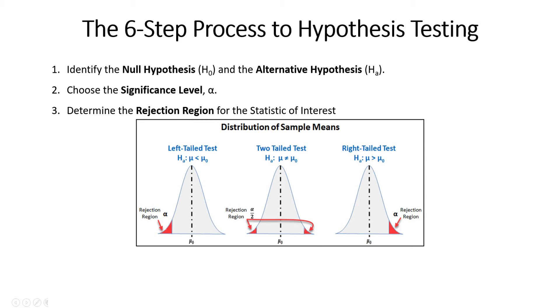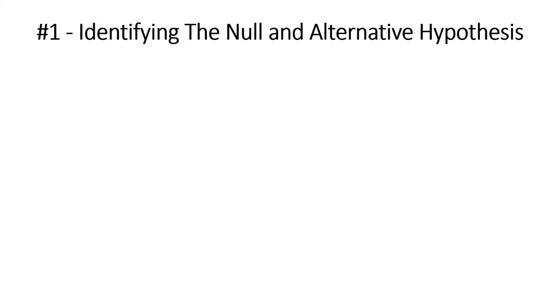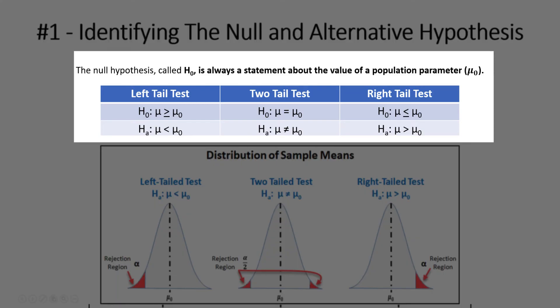Before you can determine a rejection region, you have to know your significance level. Once we have our rejection region, we collect sample data and calculate a test statistic. We compare that test statistic against the rejection criteria and make our final conclusion, then restate that decision in terms of the original problem statement. Let's walk through each step individually. Step one: identifying the null and alternative hypothesis — there are really three different ways to create a null and alternative hypothesis.